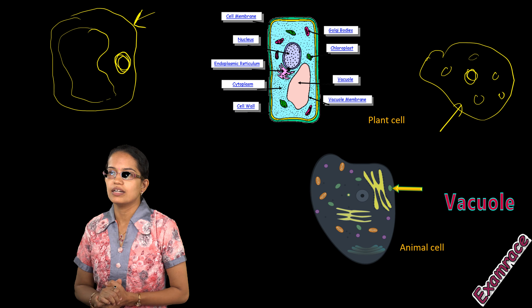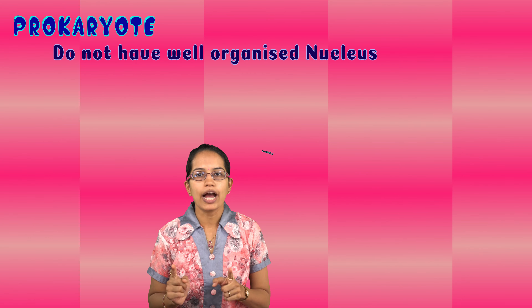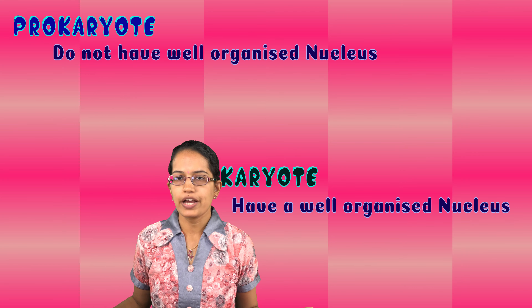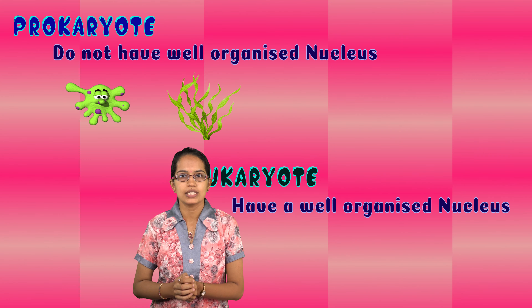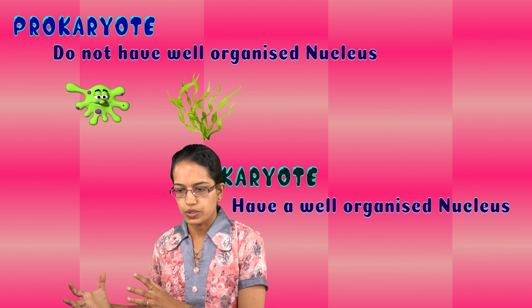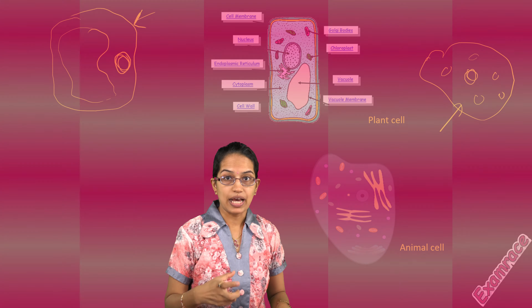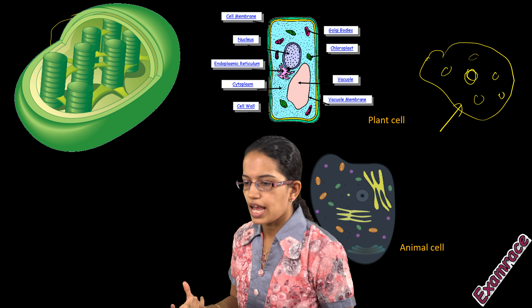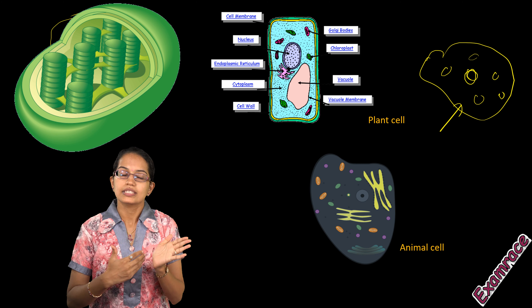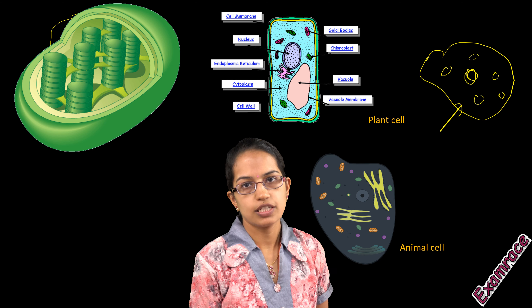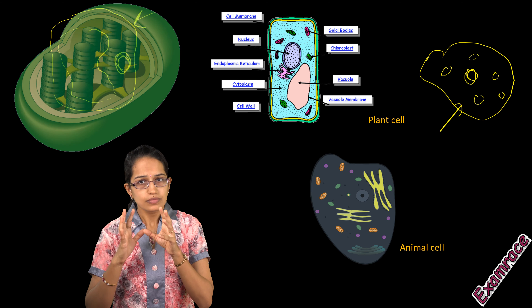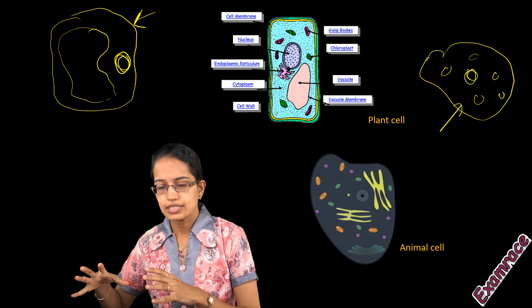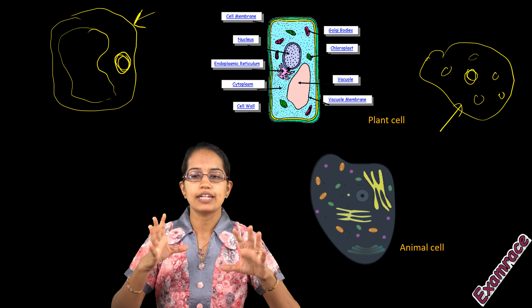An important term is prokaryotes and eukaryotes. Prokaryotes do not have a well-organized nucleus, whereas eukaryotes have a well-organized nucleus. Examples of prokaryotes are bacteria and blue-green algae. Plant cells have plastids — chloroplast is one good example. Chloroplast has green color, which is chlorophyll, and this provides the green color to the leaves. The pigment that gives green color to the leaves comes from the chloroplast, and these plastids are present in plant cells but absent in animal cells. Animal cells have flagella and cilia, which are absent in plant cells.